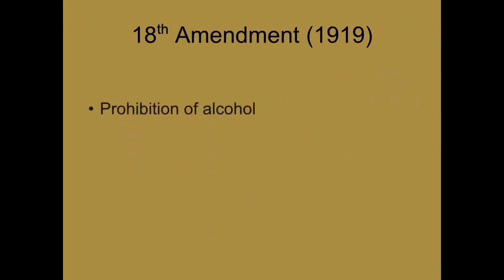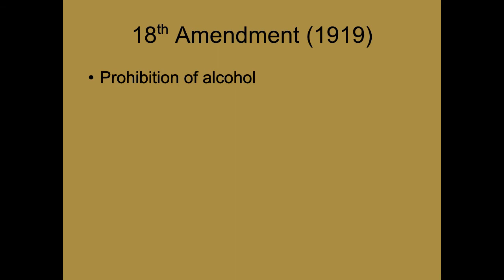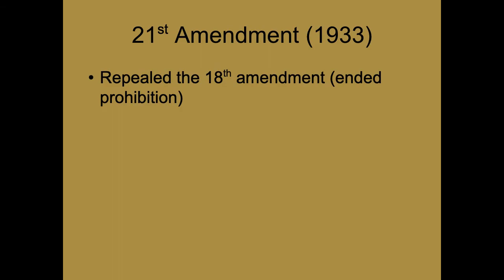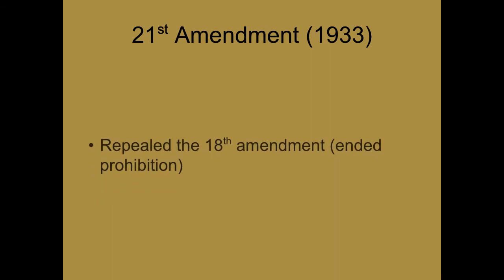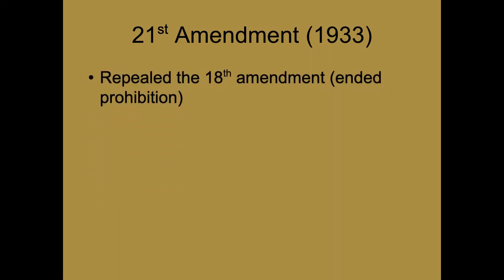The 18th Amendment is Prohibition — it made the making, selling, and consumption of alcohol illegal in the United States. That was repealed, but because it was in the Constitution, the only way to change it was a new constitutional amendment. That's the 21st Amendment — the 21st Amendment repealed the 18th Amendment. If it had been just a law, a new law could have eliminated it, but because it was a constitutional amendment, it took another constitutional amendment to change it.